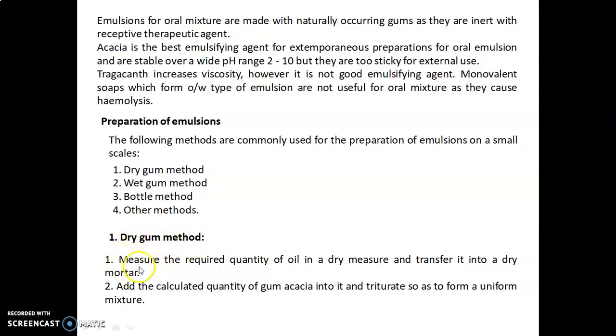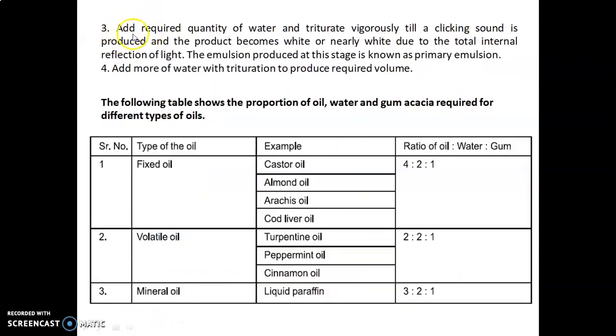Dry gum method: First, measure the required quantity of oil in a dry measure and transfer to a dry mortar. Add the calculated quantity of gum acacia and triturate to form a uniform mixture. Add required quantity of water and triturate vigorously till a clicking sound is produced and the product becomes white or nearly white due to total internal reflection of light. The emulsion produced at this stage is known as primary emulsion.